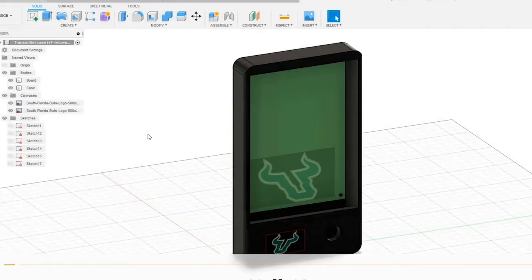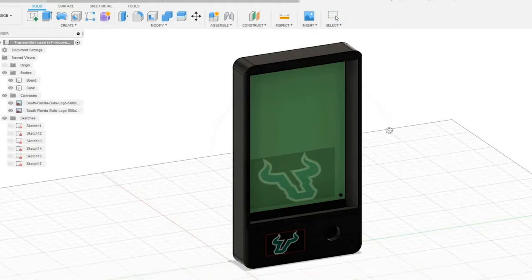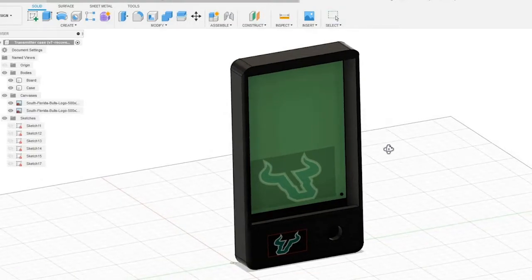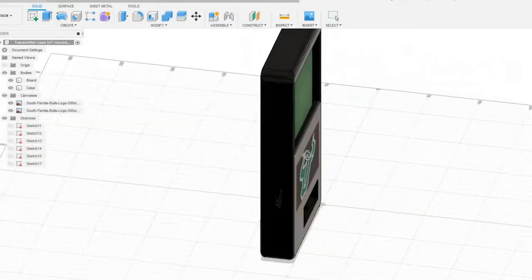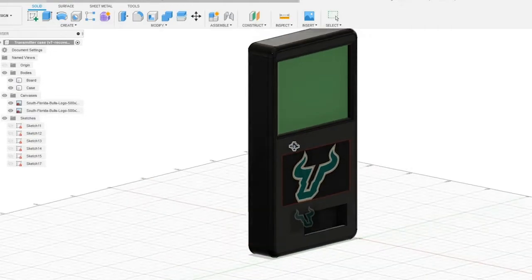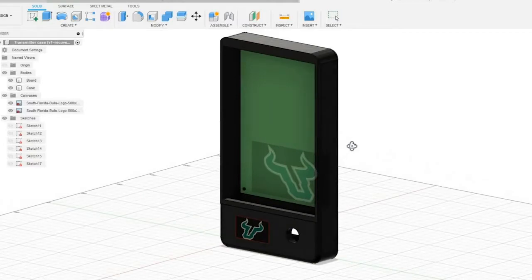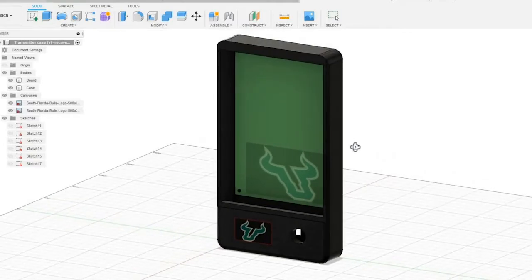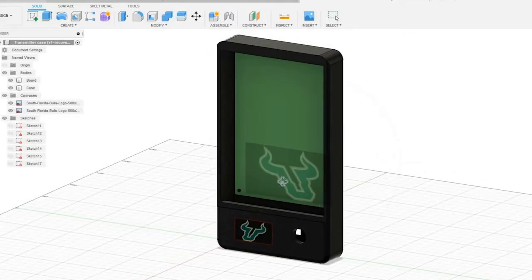So now we're going to look at the 3D model of the case that was designed in Fusion 360 for the transmitter board. We can see on the back side that there's an aperture for the exposed antennas and there's also an opening at the bottom for the battery pack. On the front there's also another opening for the power push button that will turn the system on and off.